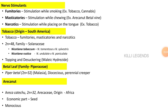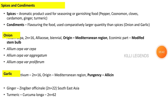Betel vine is a creeper and a dioecious, perennial plant. Areca catechu is also covered here. The center of origin and scientific family are described. The economic part is the seed. This crop is classified under masticatories. The inflorescence type is monoecious.